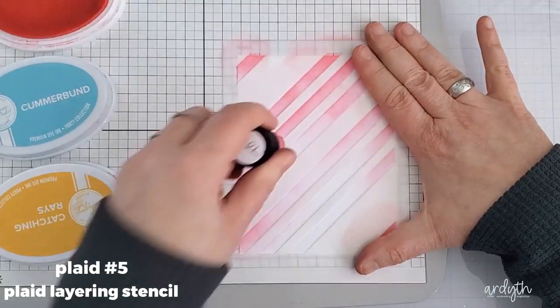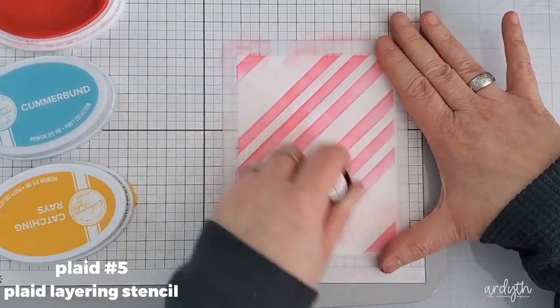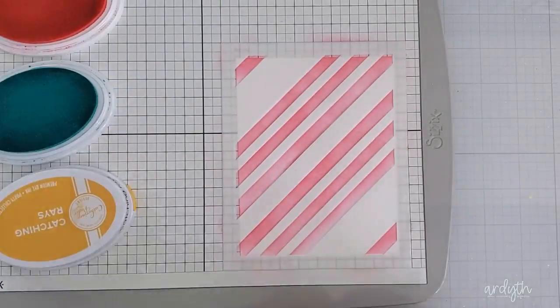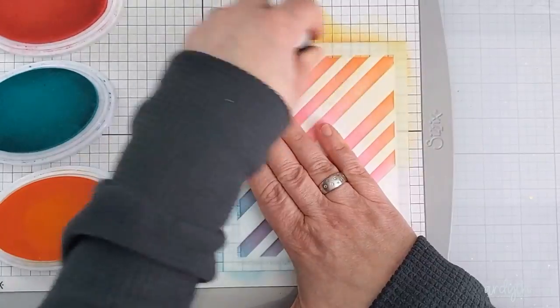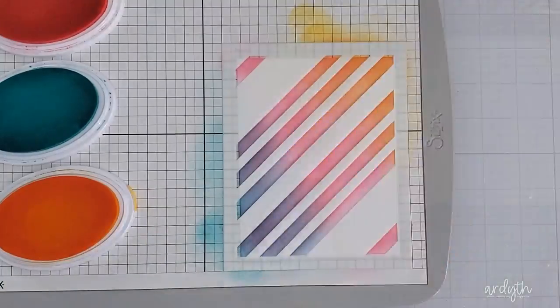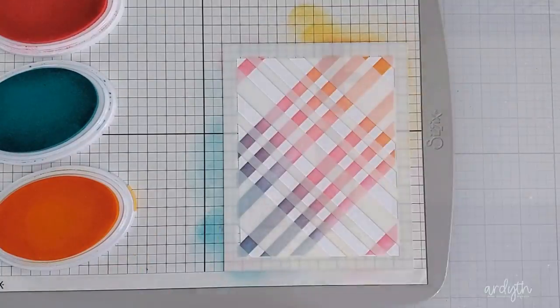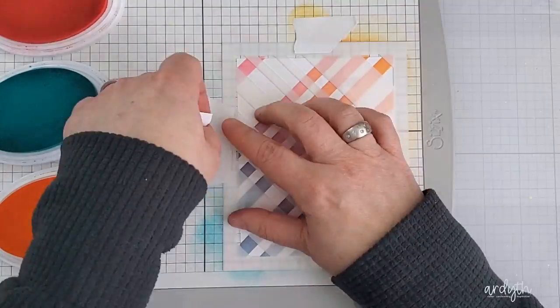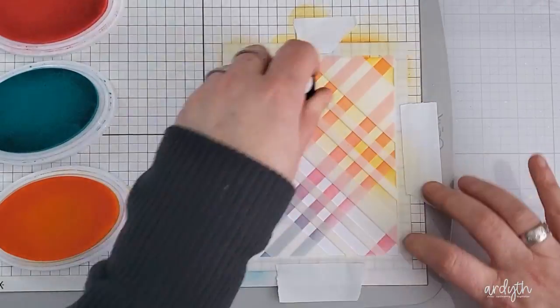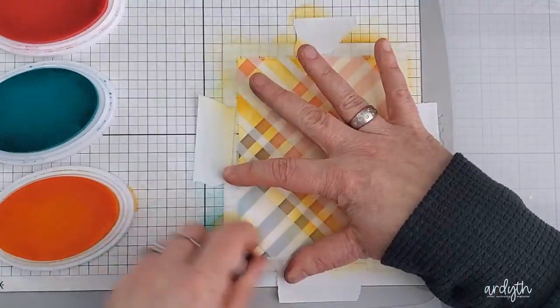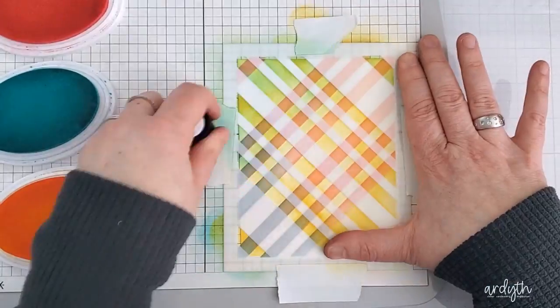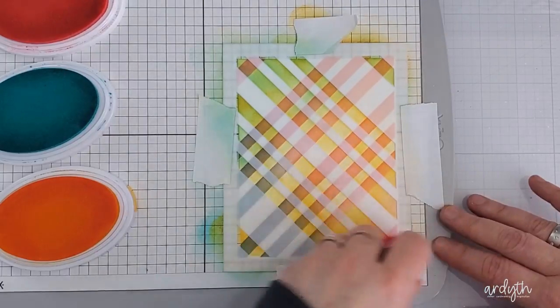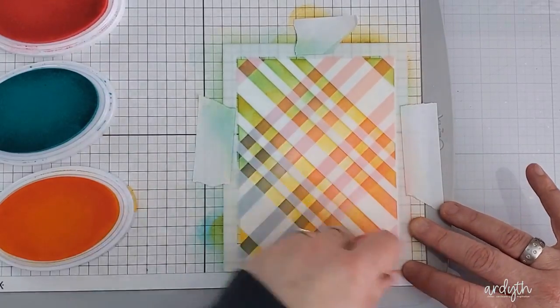Plaid number five is a layering stencil set that's actually designed to create a plaid pattern. I love this set from Pinkfresh Studio because there are three different stencils, and all you have to do is blend your ink in and then flip the stencil to get the lines going the other way. Then you layer it up with the other stencils and get a totally filled in panel. I decided just to use one layer today and leave lots of white space for a more airy feel, and I decided to blend my stripes so that they are just one color, and I think it turned out just so pretty.